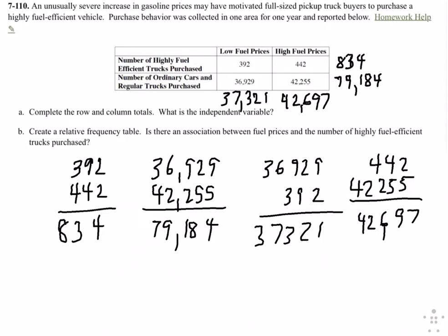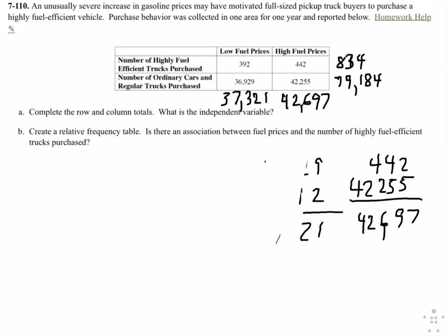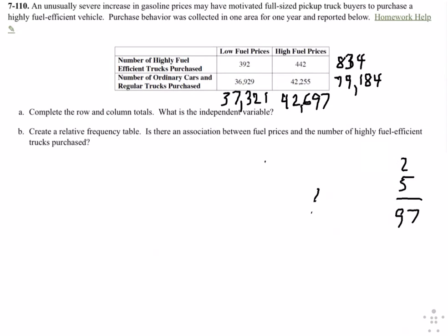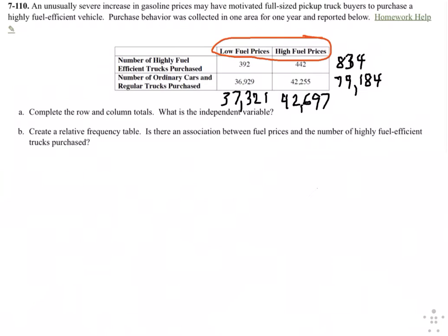Now let me clear some space. It says what's the independent variable? They're trying to see whether or not the purchase of high or low fuel-efficient cars and trucks depends on the fuel prices. So the fuel prices are the independent variable, and the number of cars of each type purchased is dependent. So the independent variable is the fuel price.